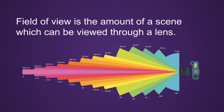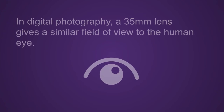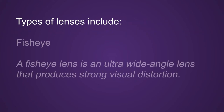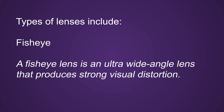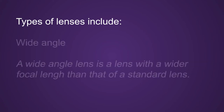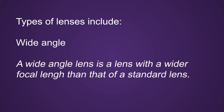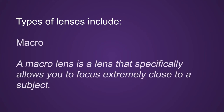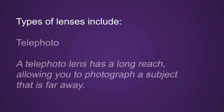Field of view is the amount of a scene which can be viewed through a lens. In digital photography, a 35mm lens gives a similar field of view to the human eye. Types of lenses include fisheye, wide-angle, standard, macro, and telephoto.